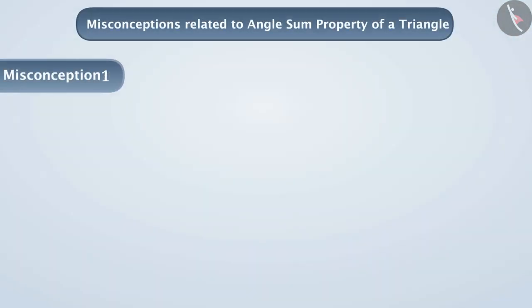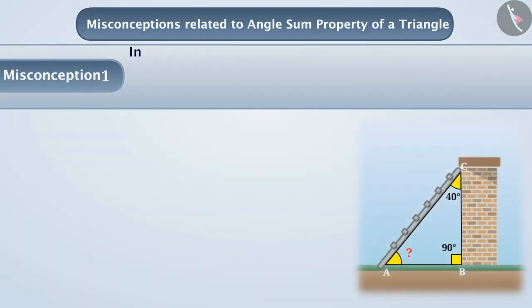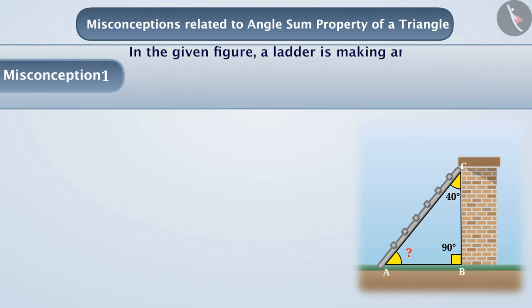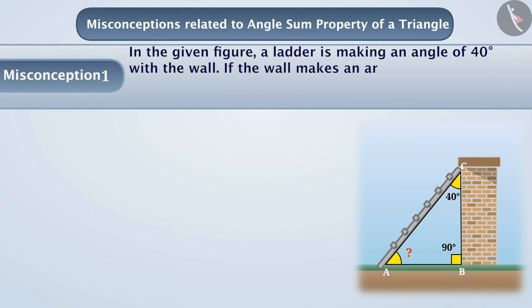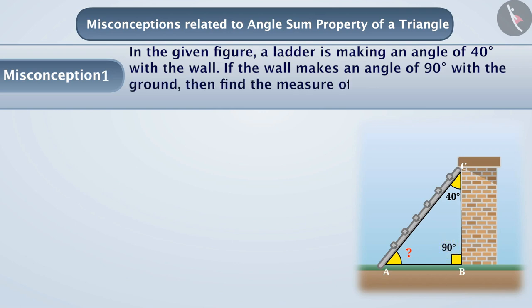Misconception 1. In the given figure, a ladder is making an angle of 40 degrees with the wall. If the wall makes an angle of 90 degrees with the ground, then find the measure of the angle between the ladder and the ground.